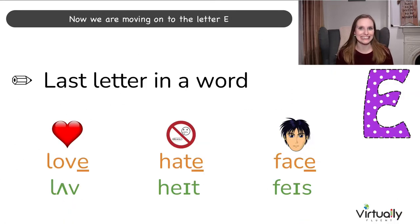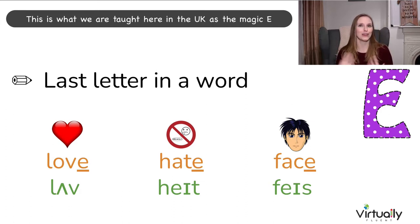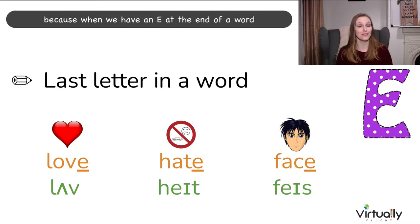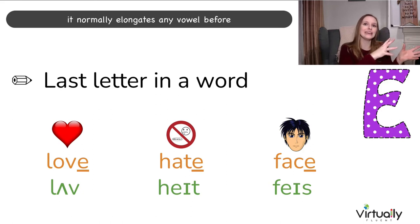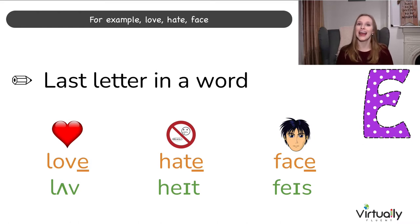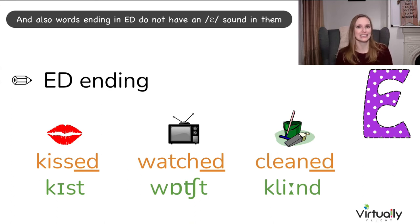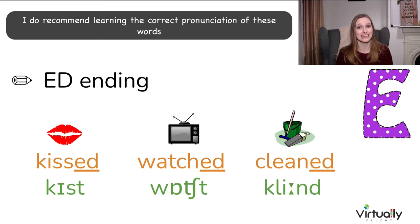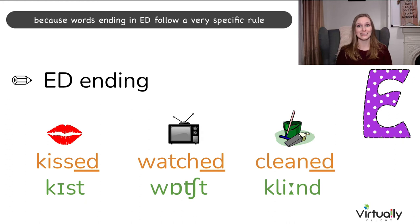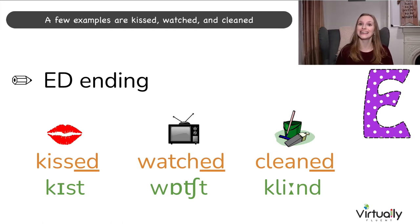Now we're moving on to the letter E. This is mostly silent when it is the last letter in the word. In the UK, this is taught as the 'magic E', because when we have an E at the end of a word, it normally elongates any vowel before it. In general, we do not pronounce it as the last letter. For example: love, hate, face. Also, words ending in ED do not have an E sound — for example: kissed, watched, and cleaned.